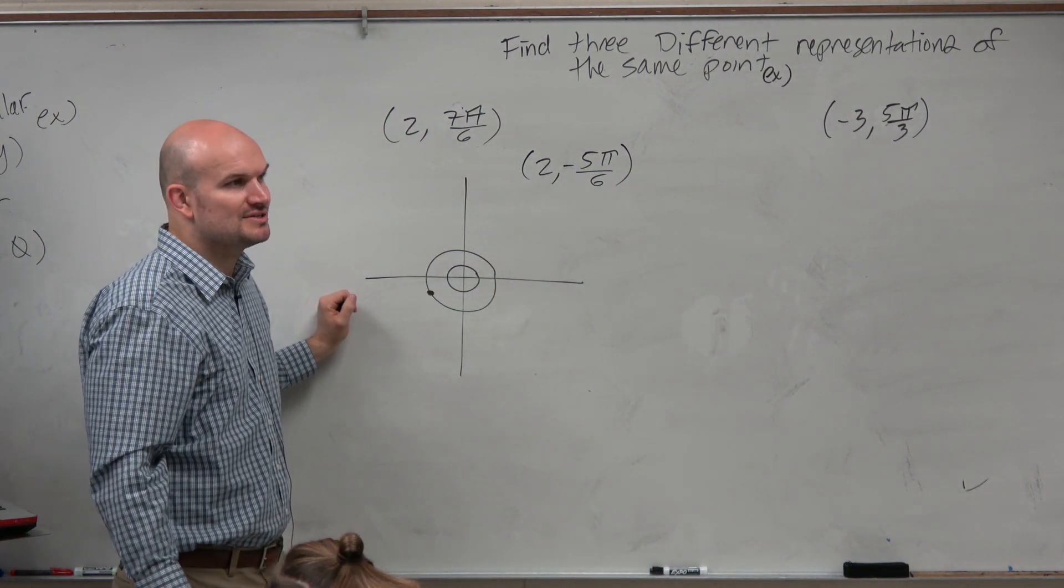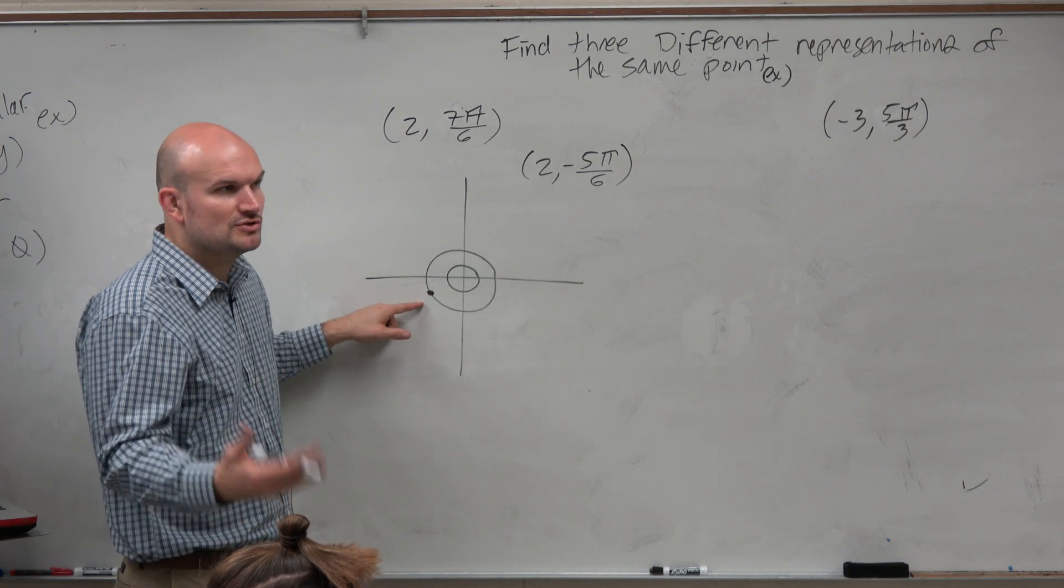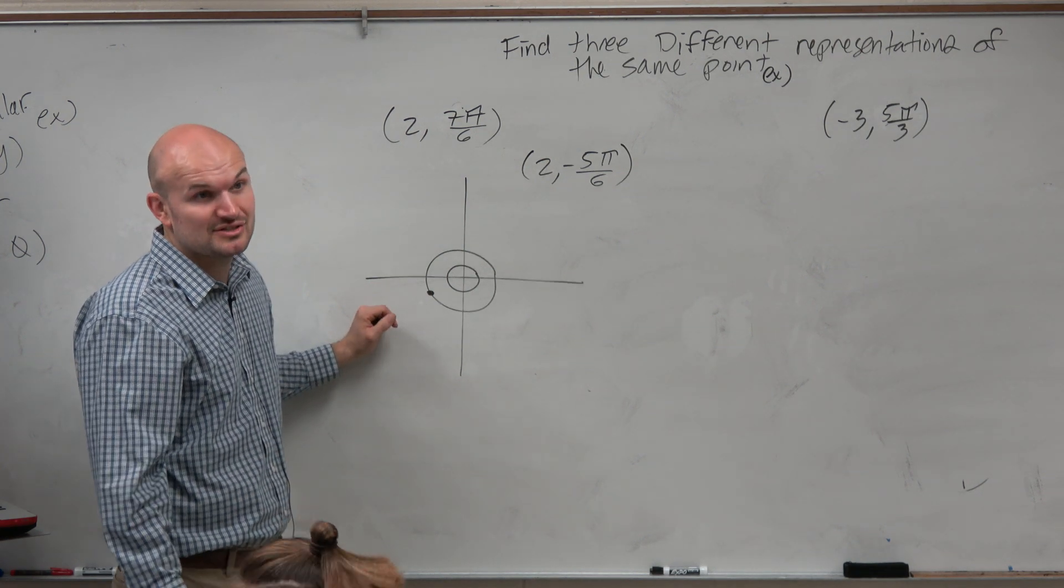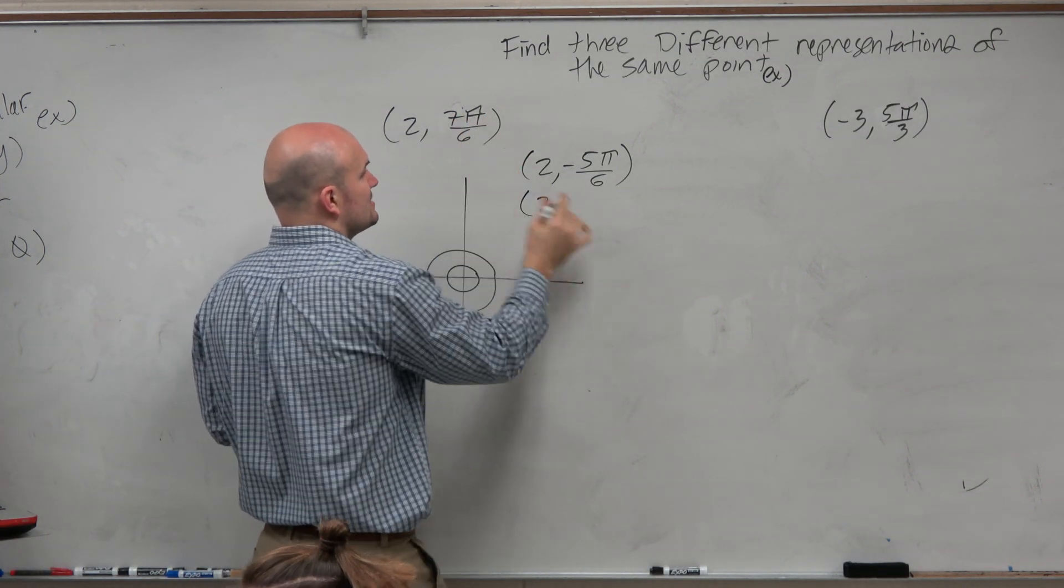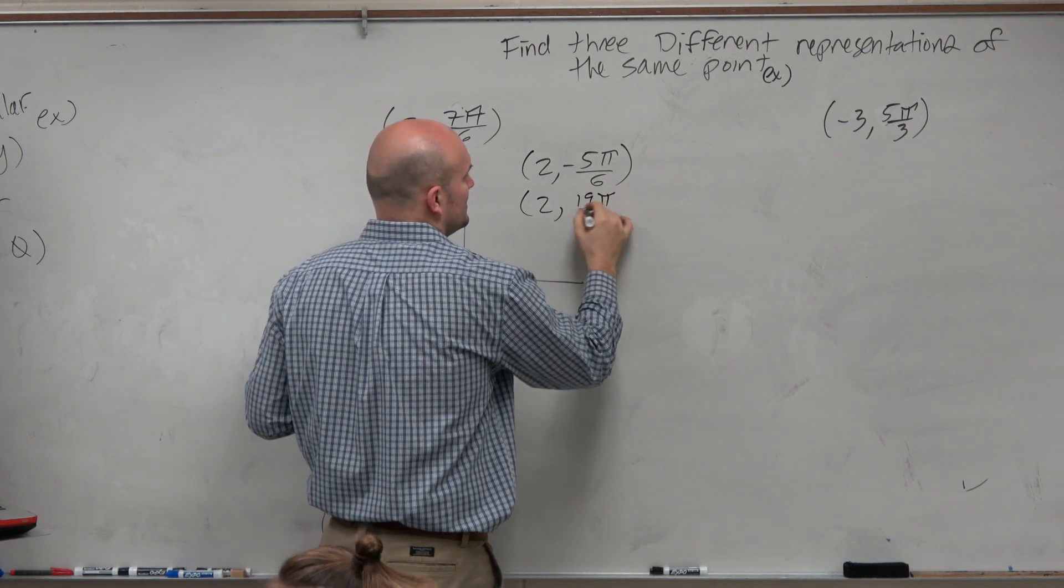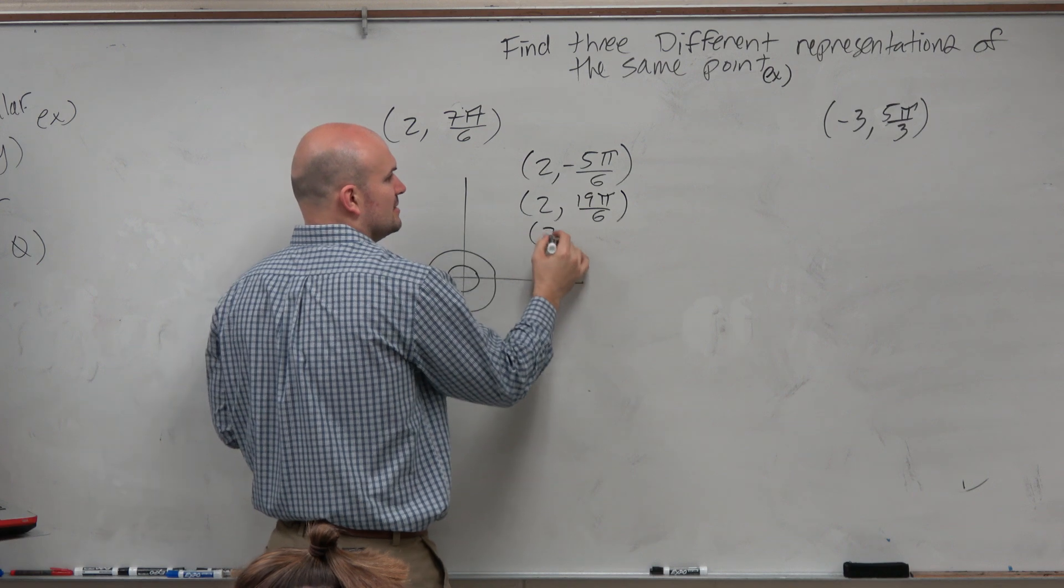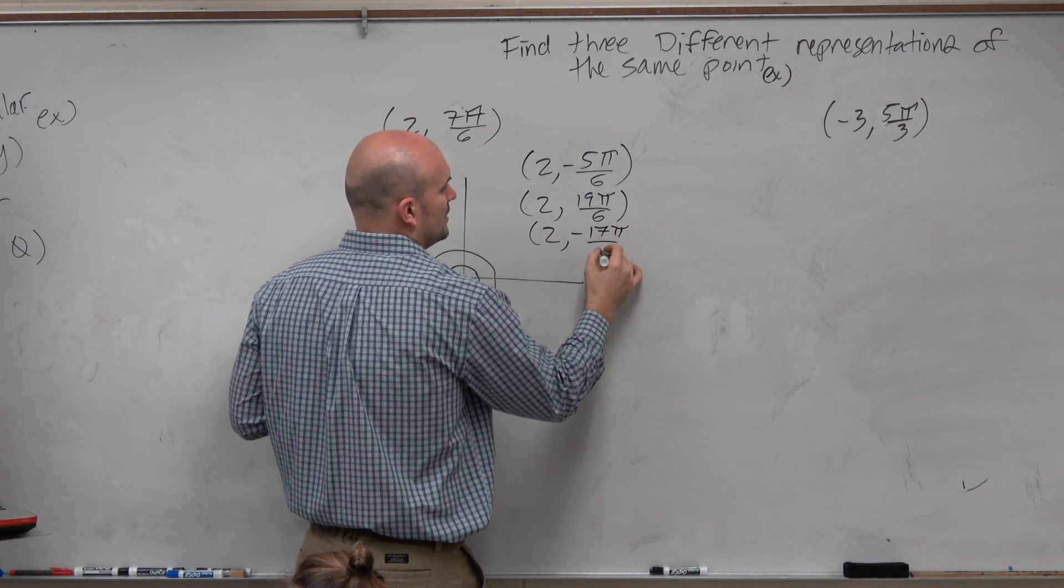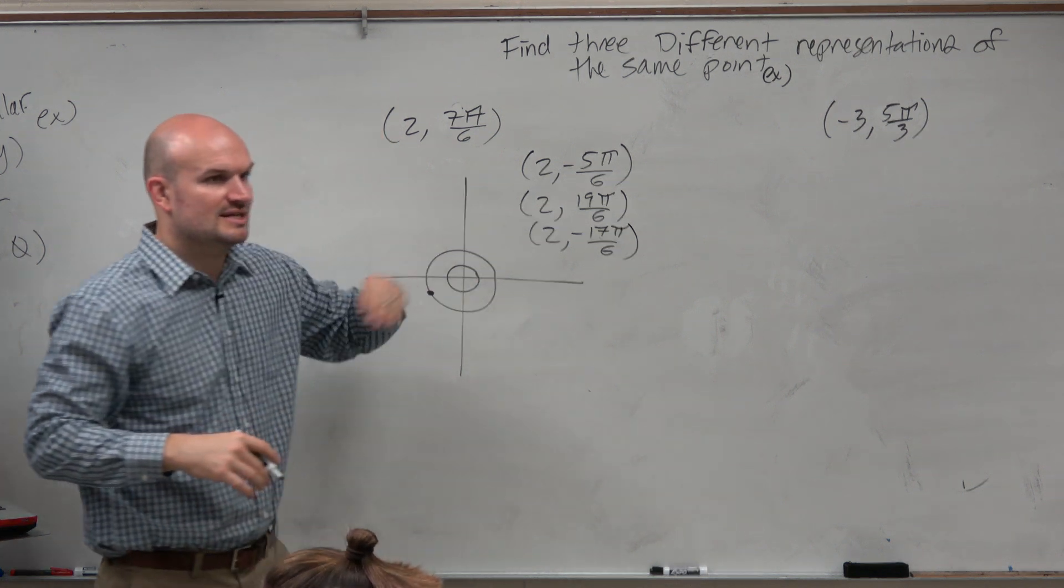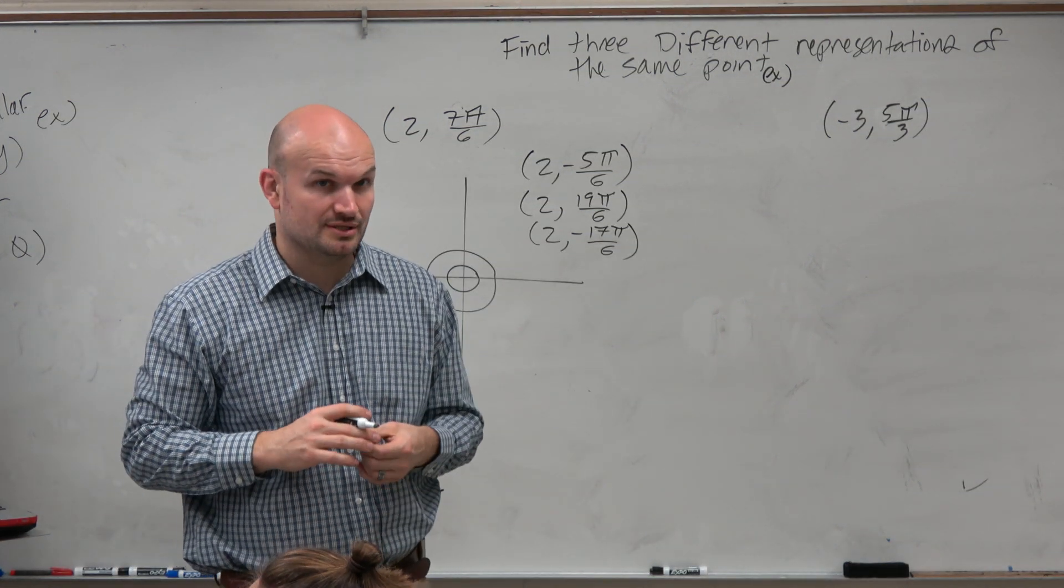Now, hopefully you guys recognize you could just do coterminal angles. So there's actually infinitely many answers to this, right? You could just keep on adding and subtracting 2π. So if we added 2π to this, that'd be 19π over 6. If I subtracted 2π from this, I'd get negative 17π over 6. And you guys can start seeing there's a lot of answers. So probably a multiple choice would probably be a good type of question for this one.